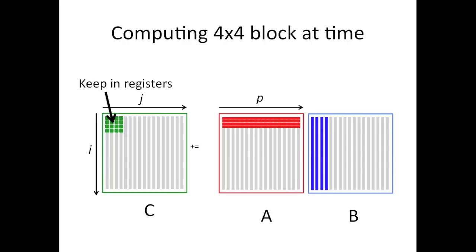And here I choose to do a block that's four by four. So now there are 16 elements of C that we're going to keep in registers. And to update those, we're going to do a block block matrix multiplication, where we're doing 16 dot products simultaneously